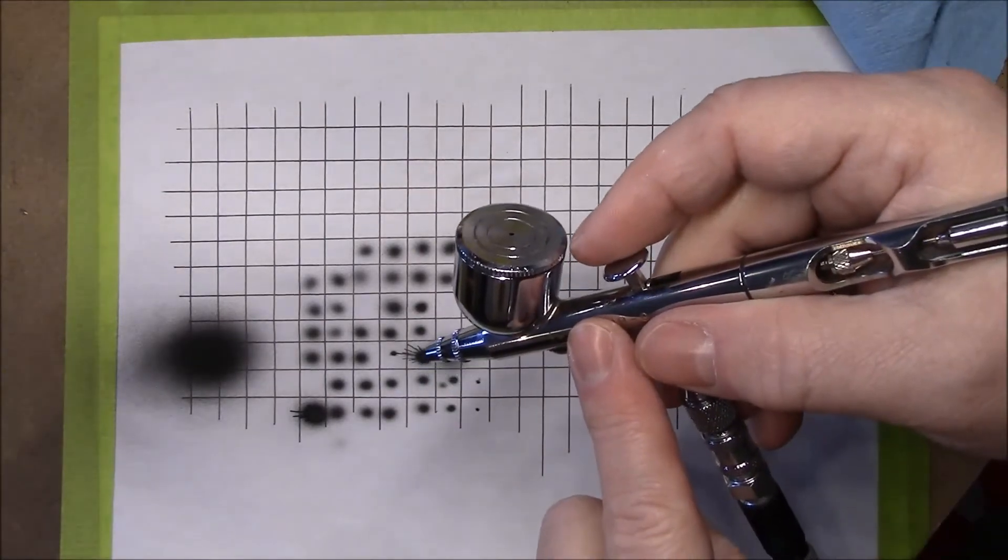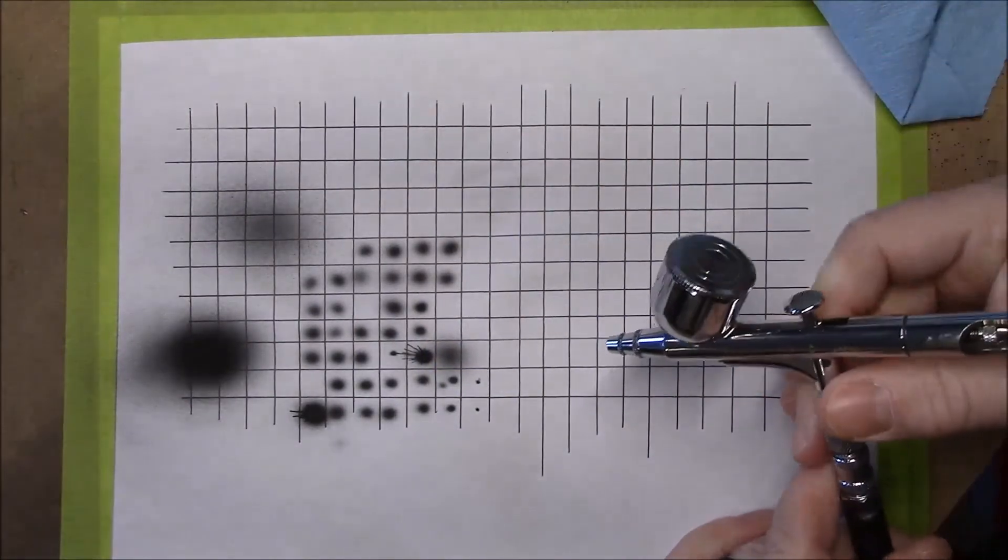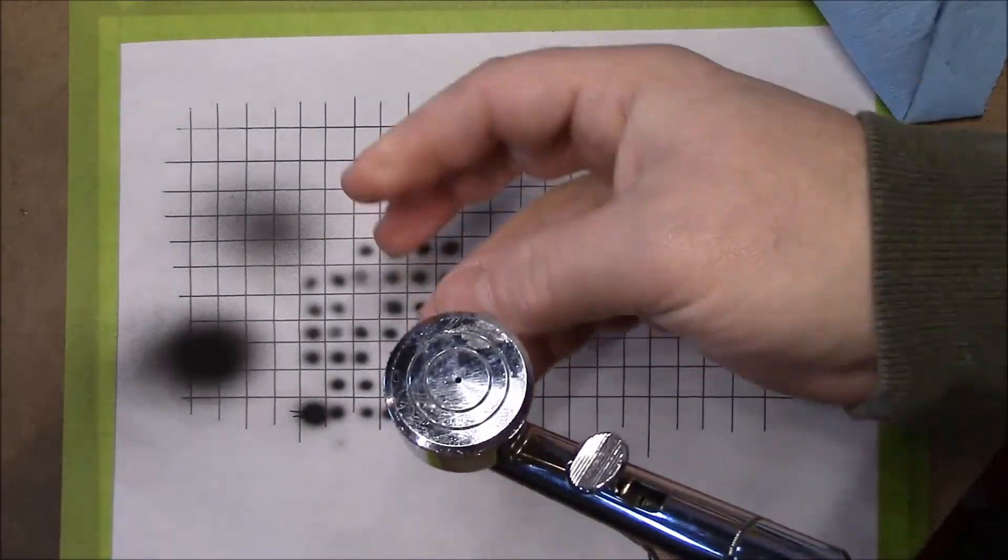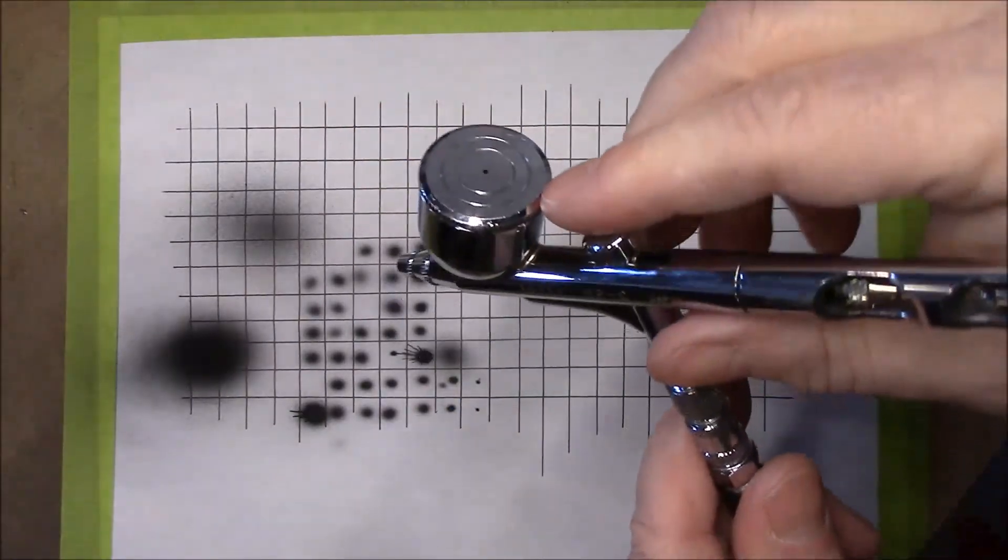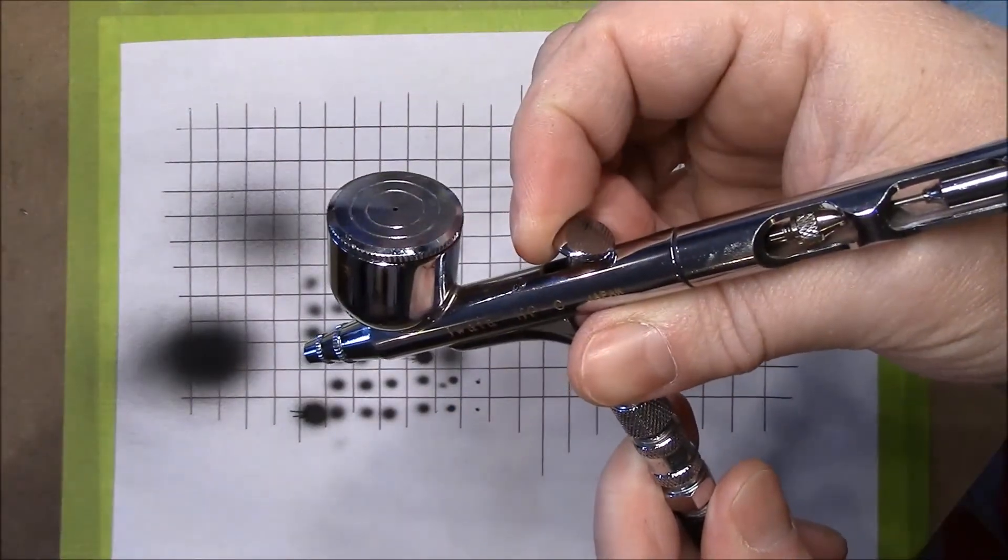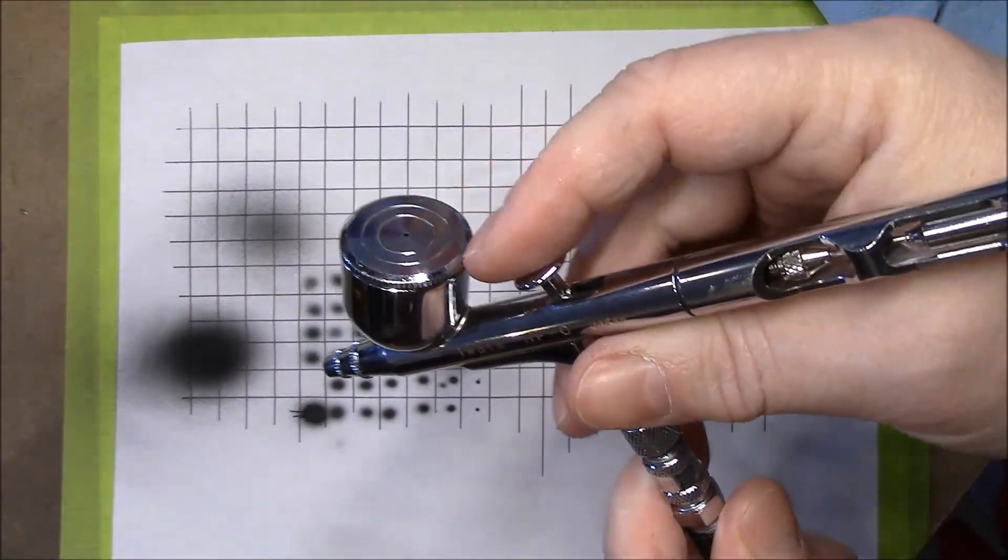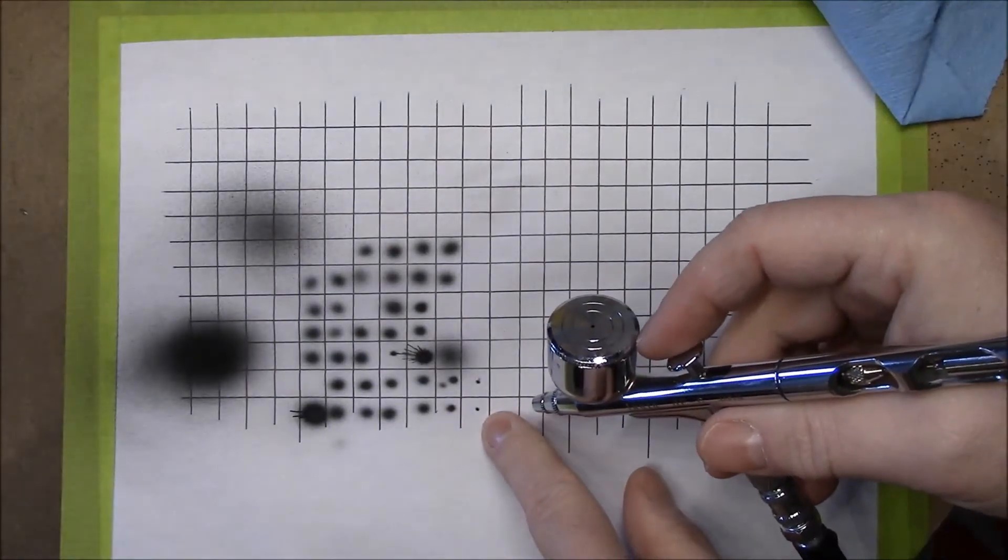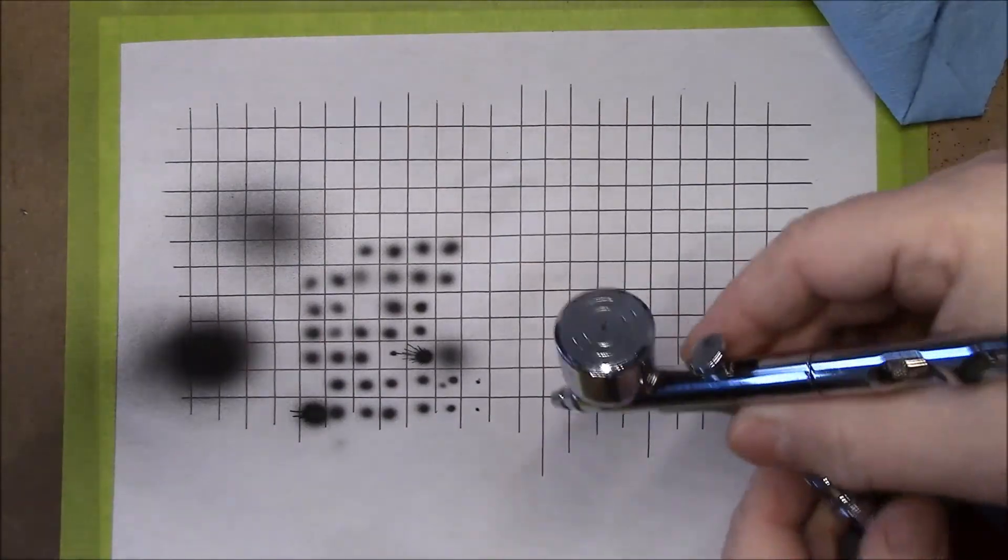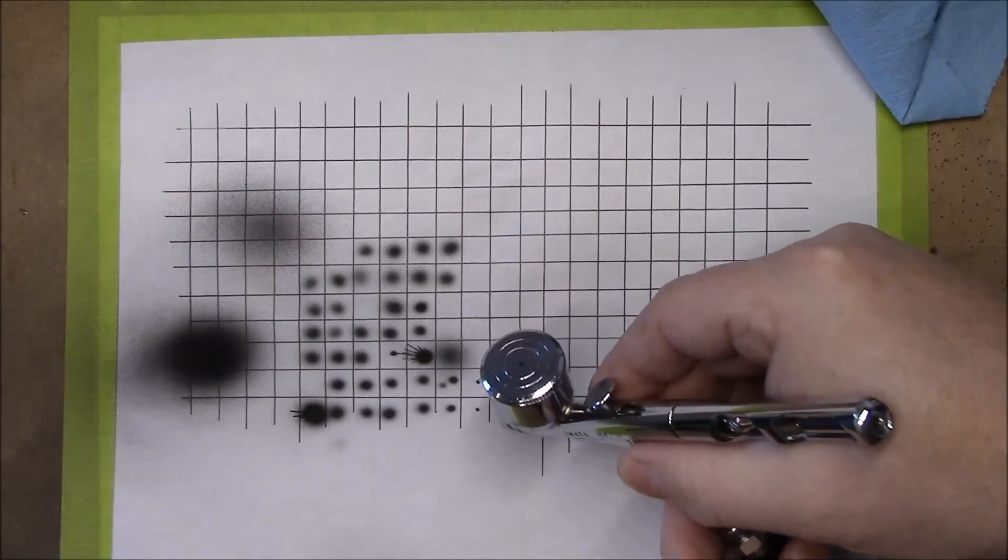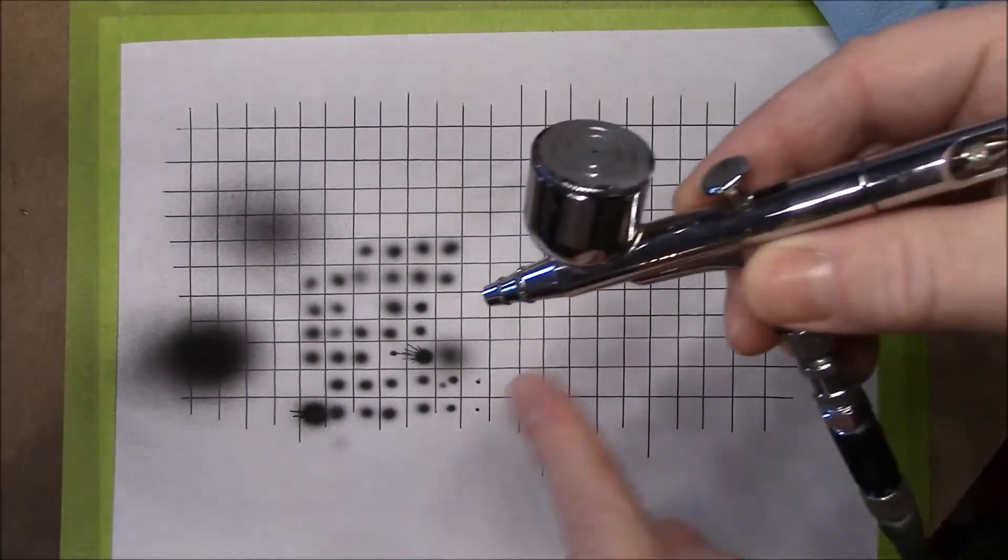The needle size doesn't matter. You know when the needle size matters? When you hold it wide open like this. That's when it matters. A bigger needle will allow you to spray bigger pattern at full trigger back, trigger lock, all the way back here. But when you're spraying details, any size needle can be controlled to give you the same size hairline dot. That doesn't, think about it. The needle doesn't matter.